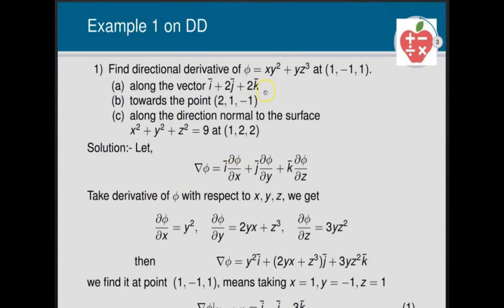First, we find gradient of φ, which equals i(∂φ/∂x) + j(∂φ/∂y) + k(∂φ/∂z), as discussed in the previous lecture. Now, ∂φ/∂x = y², ∂φ/∂y = 2xy + z³, and ∂φ/∂z = 3yz². Substituting these values, grad φ = y²i + (2xy + z³)j + 3yz²k.